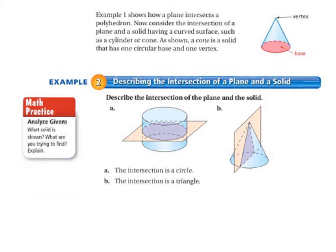Moving on to page 389 and example 2, let's take a look at the top of the page where it says example 1 shows how a plane intersects a polyhedron. As a review from 5th grade, a polyhedron is a three-dimensional figure in which all of the surfaces are polygons.